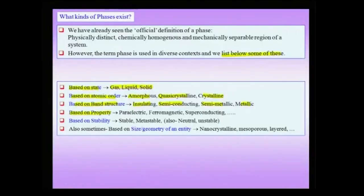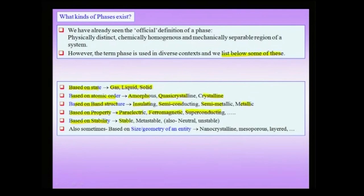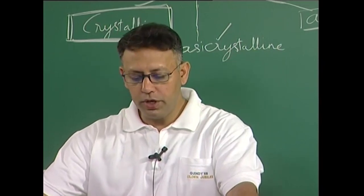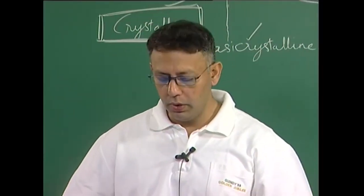Additionally, you could have definitions of phase based on properties, like a ferromagnetic phase, superconducting phase, or paraelectric phase. When you heat a ferromagnetic substance it turns into a paramagnet — a ferromagnetic to paramagnetic transformation can be considered a phase transformation defined based on property. Additionally, based on stability, people also define phases as stable or metastable. When talking about an equilibrium phase diagram, our focus will be on stable phases, though sometimes phase diagrams are extended to include metastable phases.